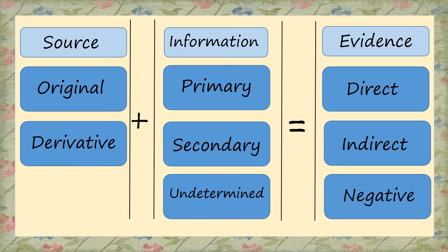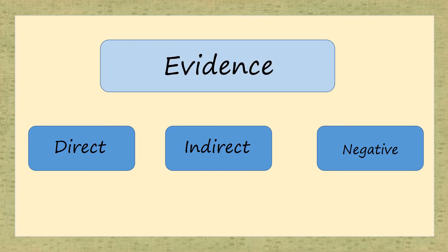Let's look at our matrix again. Remember that sources provide information, and that information becomes evidence. Evidence comes in three different kinds: direct, indirect, and negative.